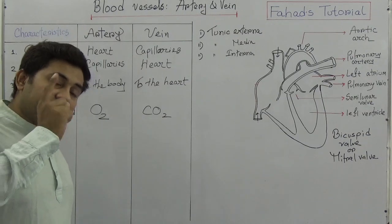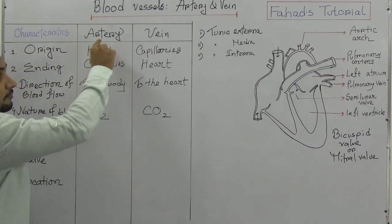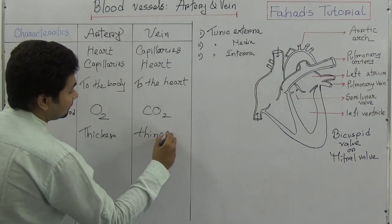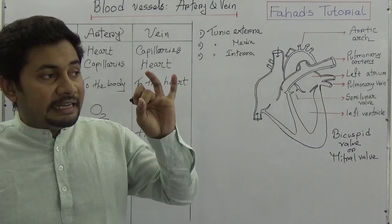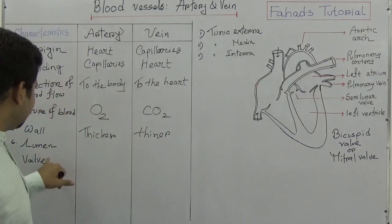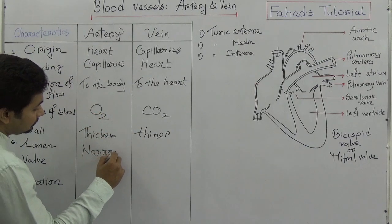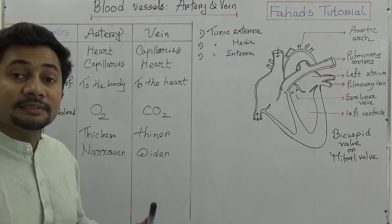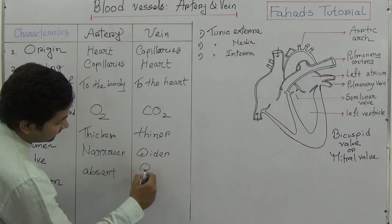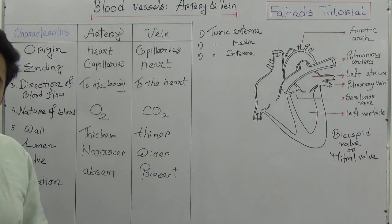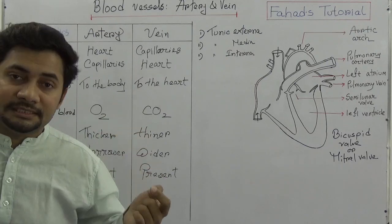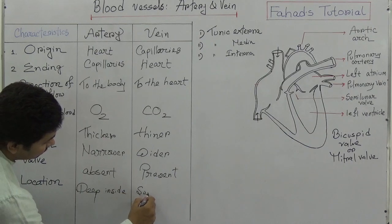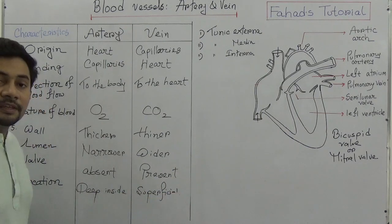The wall of arteries is thicker while the wall of veins is thinner. Because the artery wall is thicker, the lumen — the internal passage — is narrower in arteries and wider in veins. Valves are absent in arteries but present in veins. Regarding location: arteries are located deep inside the body, while veins are superficial.